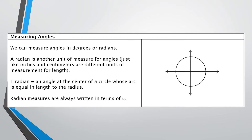This first lesson is going to be all about different ways you can measure angles. We're going to be talking about measuring angles in two different ways: using degrees and using radians. Radians is something new that you probably haven't seen before. It's just another unit of measurement for an angle, just like you would have different units of measurement for length — for instance, inches or centimeters, or time in minutes or hours.